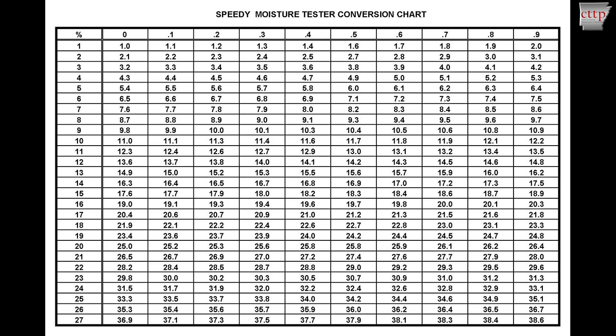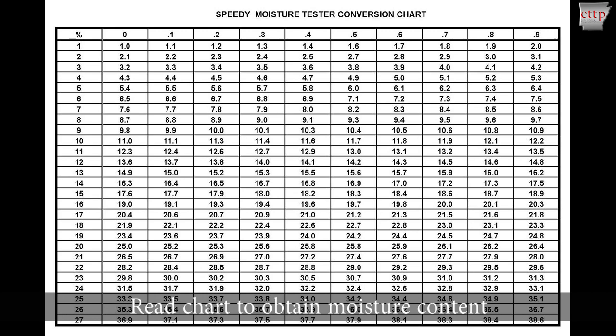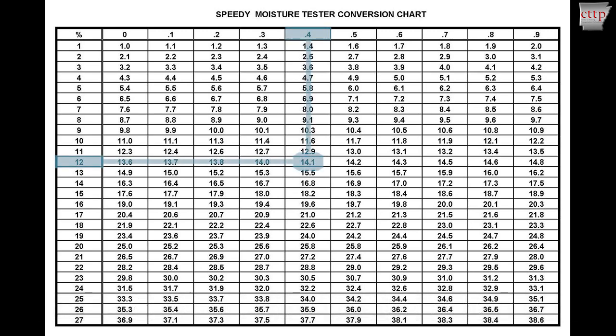We must use the conversion chart to convert the dial reading. In this chart, whole number values are listed in the left column and 10th percent values are shown across the top row. Find the value where the whole number and 10th percent values intersect.